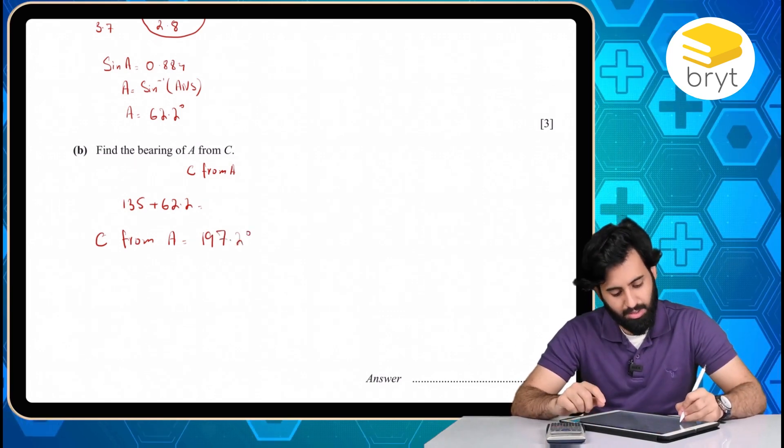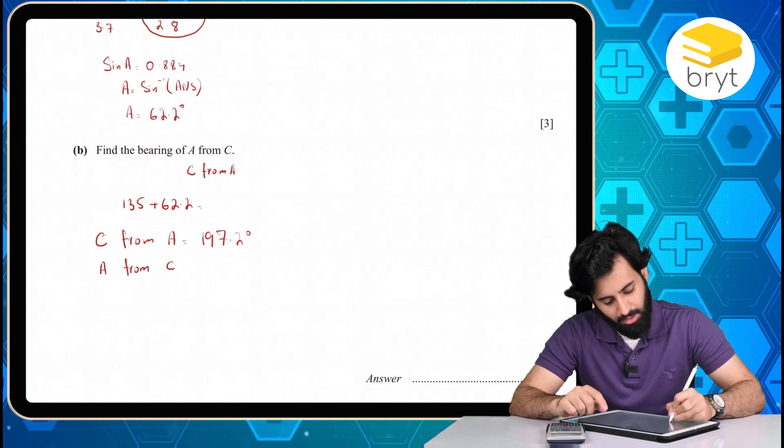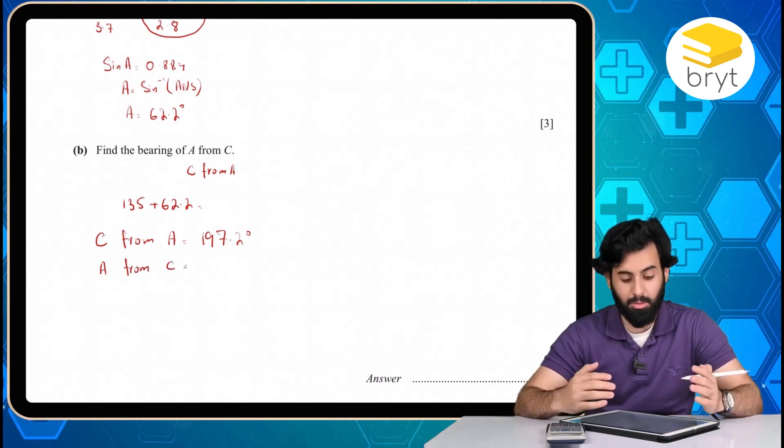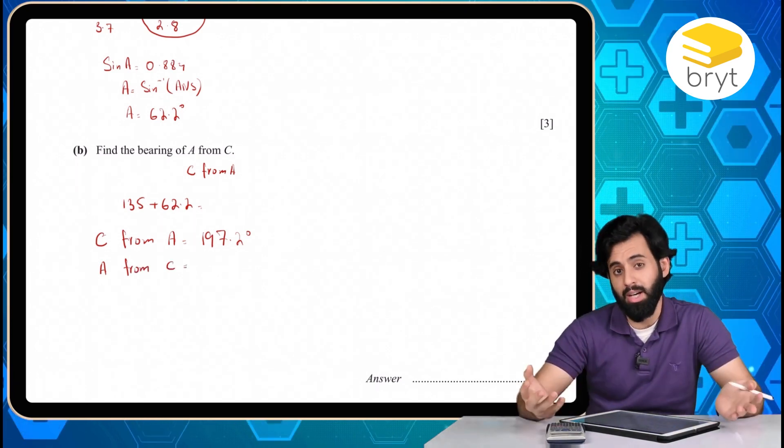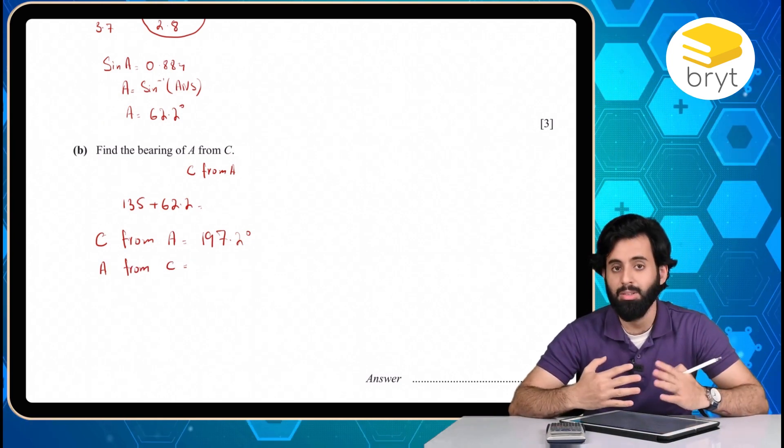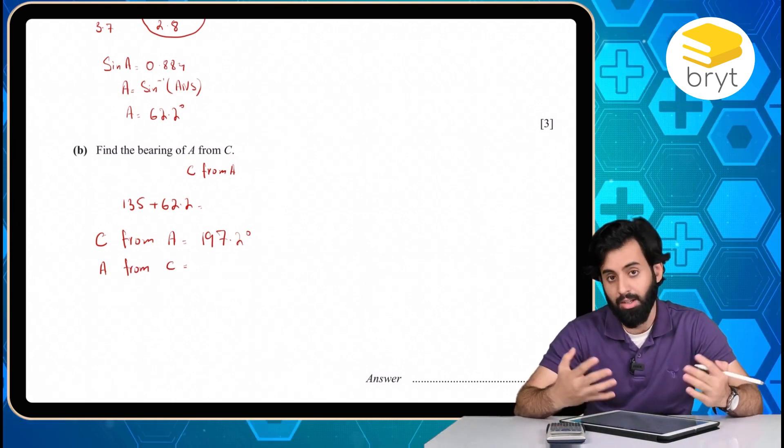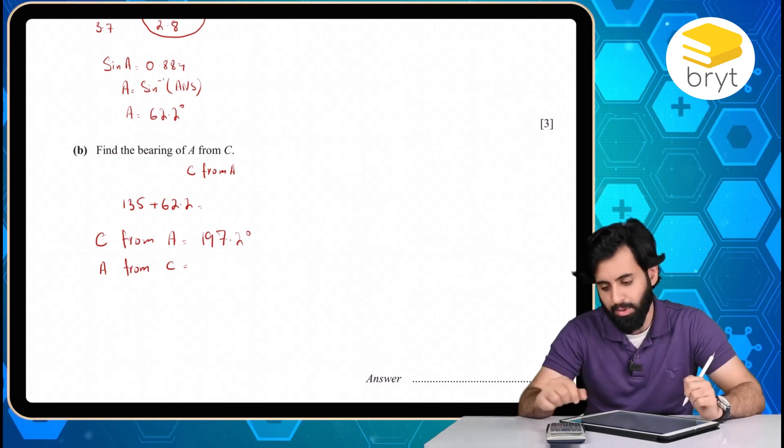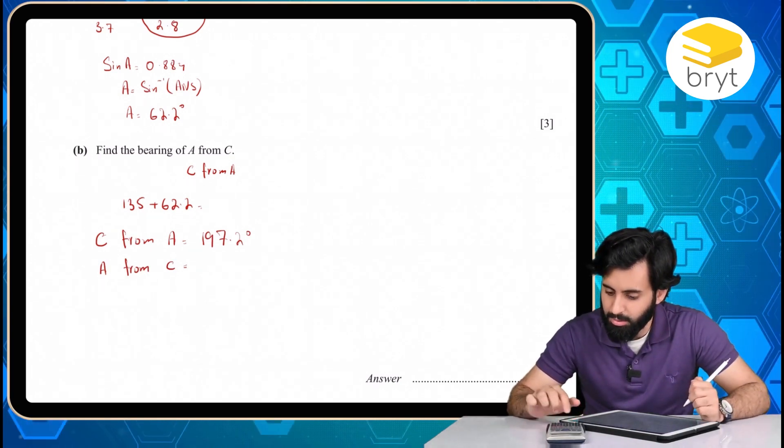Now if I switch this, if I turn this into A from C, that means what I need to do is, I need to subtract, well, you either add 180 or you subtract 180. Now since this value is already greater than 180, that means I can't add 180 to it. So instead, I'll subtract 180. And the second I do that, what do I get?